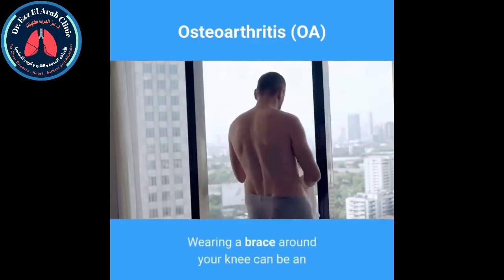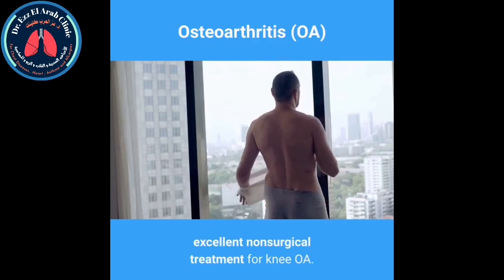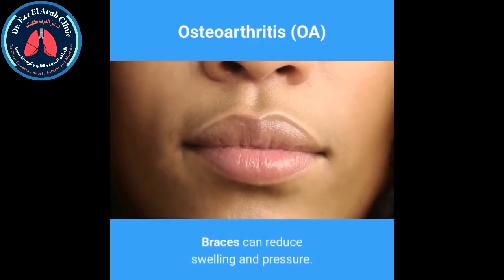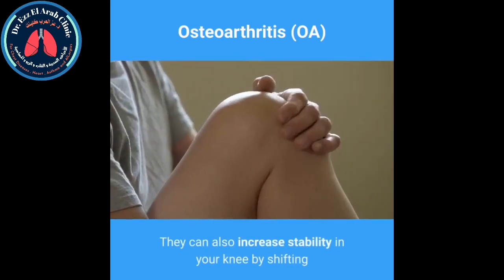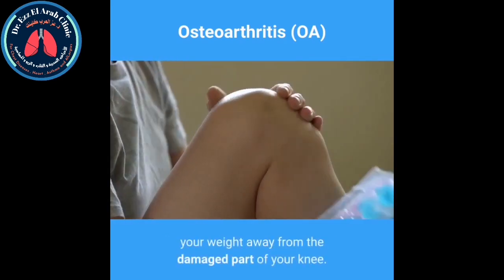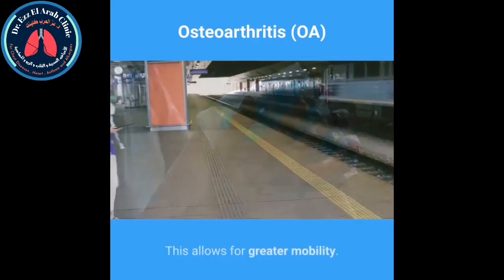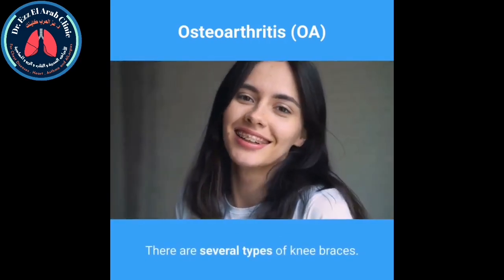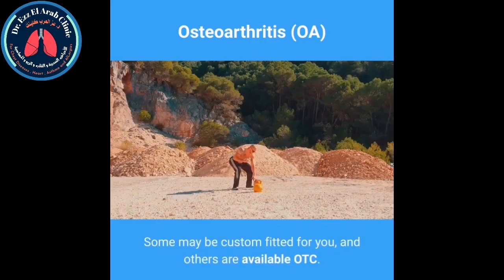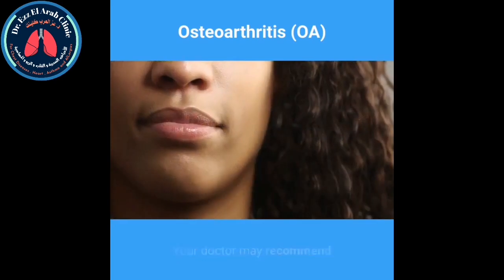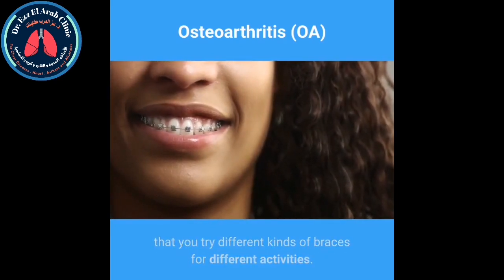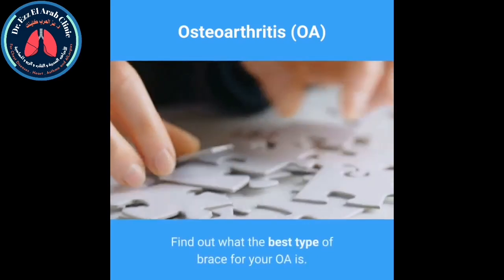Osteoarthritis knee brace. Wearing a brace around your knee can be an excellent non-surgical treatment for knee OA. Braces can reduce swelling and pressure, and increase stability by shifting your weight away from the damaged part of your knee, allowing for greater mobility. There are several types of knee braces — some may be custom fitted, while others are available over the counter. Your doctor may recommend trying different kinds of braces for different activities.